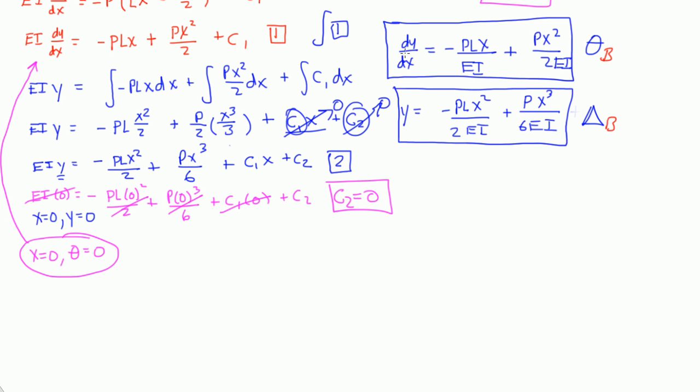So, into this first equation, this dy dx, theta B is equal to negative PLX. X is equal to L, right? Over EI plus PX squared, and X is L, so L squared, over 2EI.